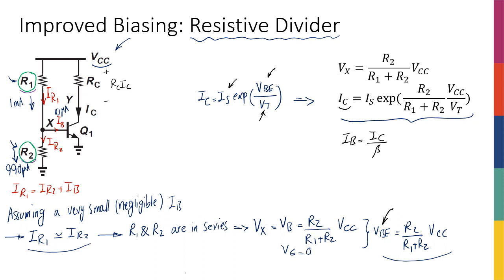so that we can actually make sure that I can say that Ib is very small. As long as I can make sure that Ib is very small and it is negligible, then I can actually get a beta-independent biasing. So beta-independent biasing is guaranteed if Ib is very small.